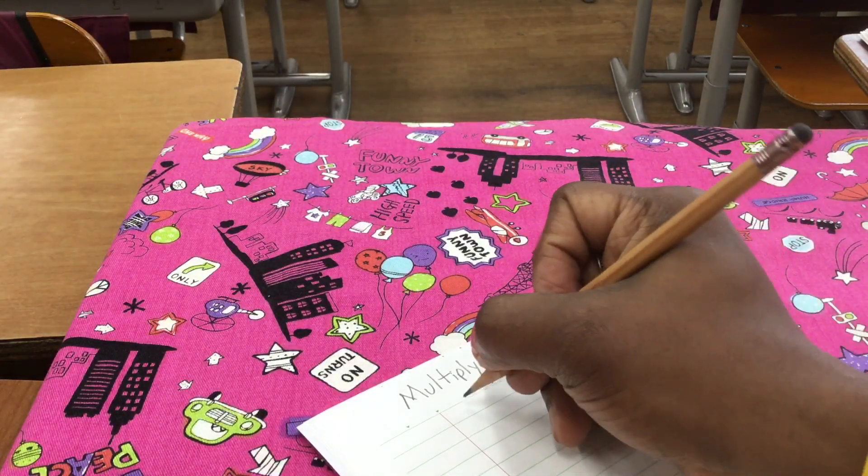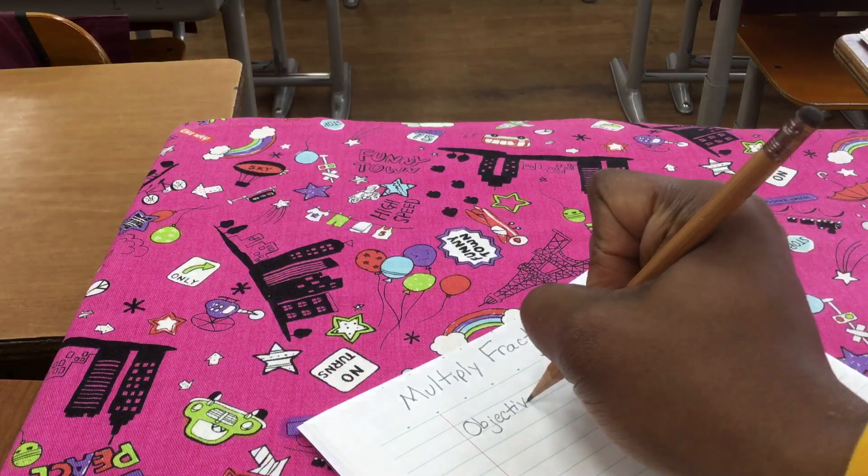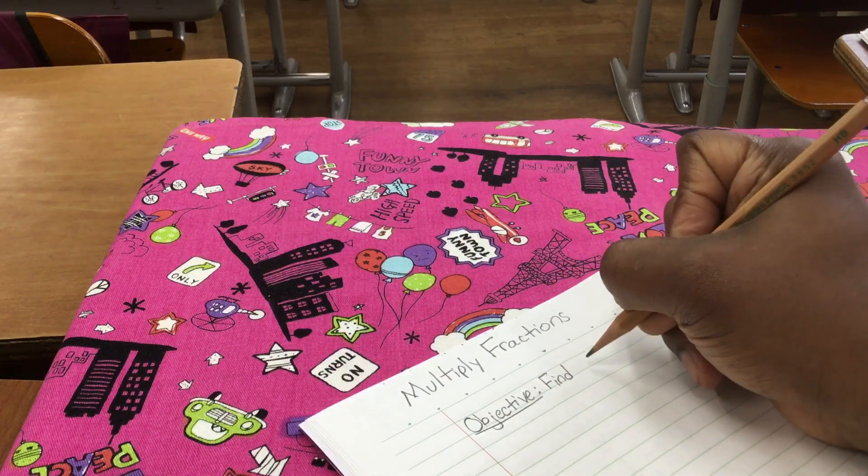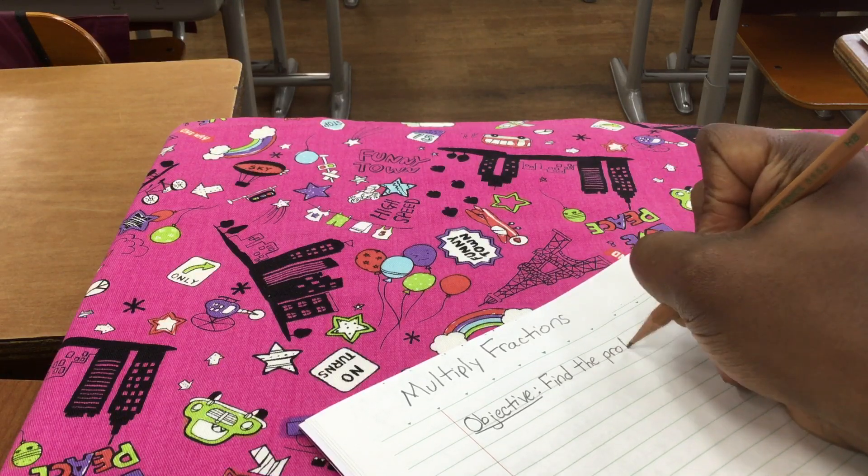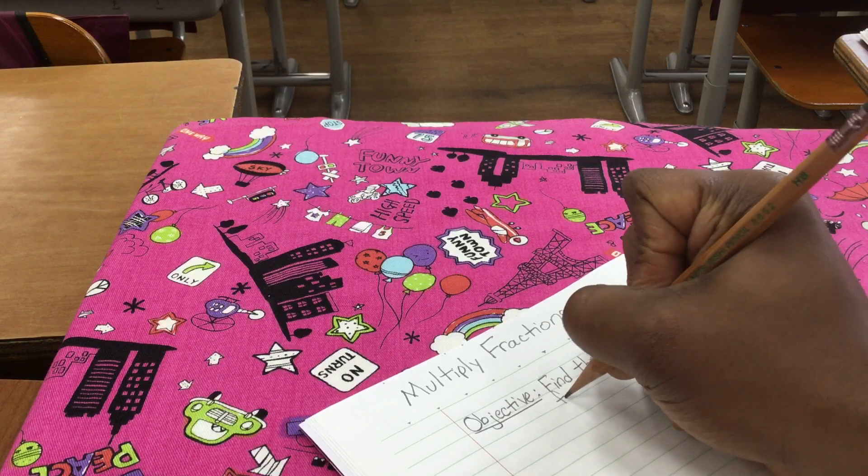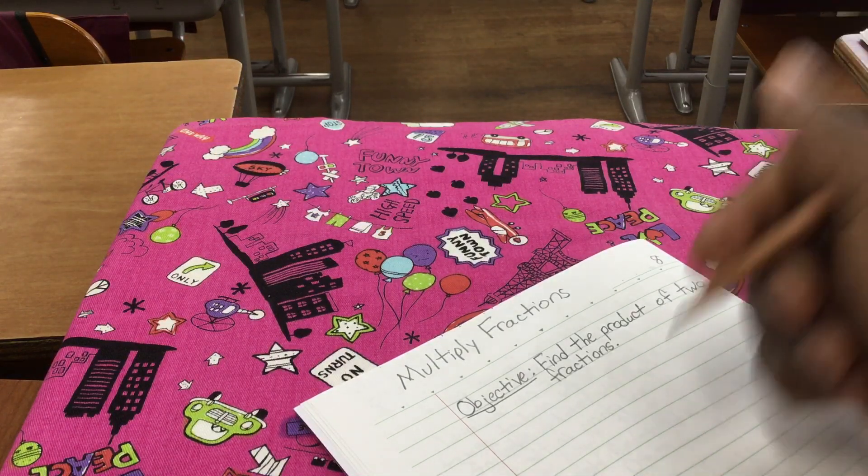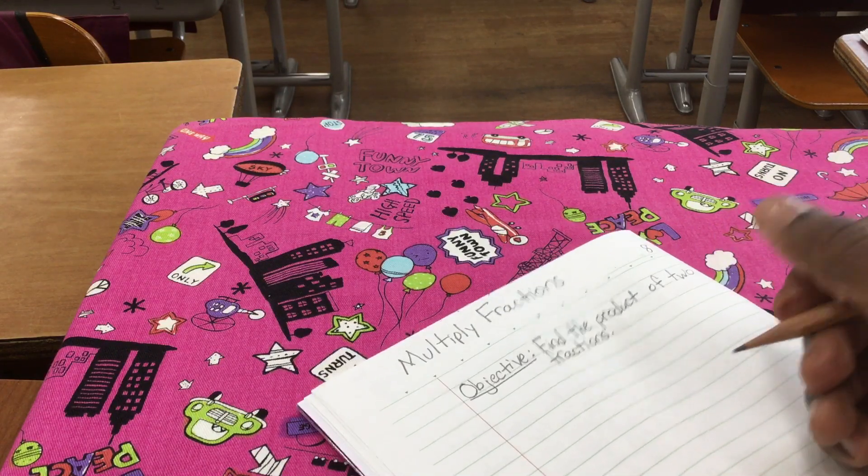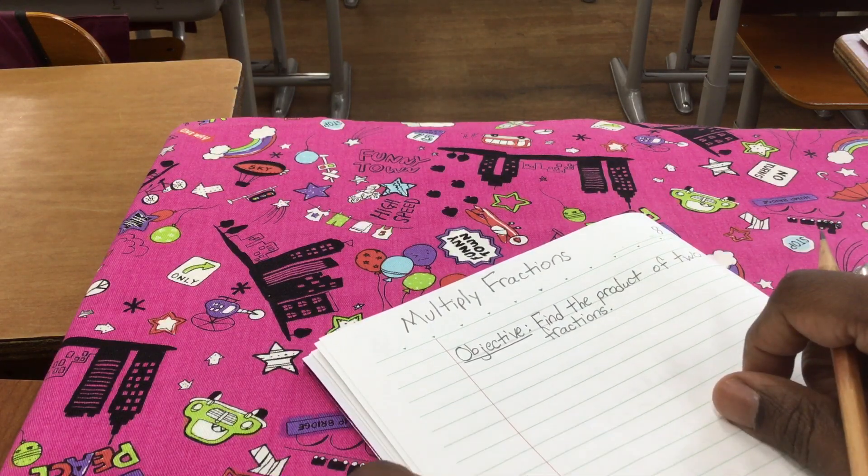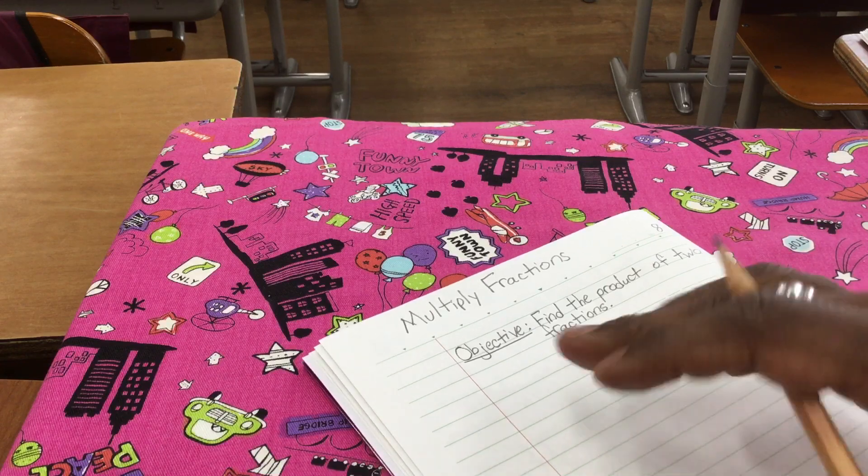Now the first thing I'm going to write is my objective. It's very important because this tells us what we are going to study. The objective is to find the product of two fractions. And I like multiplying fractions very much because I think it's easy. Really easy. It takes less time too.